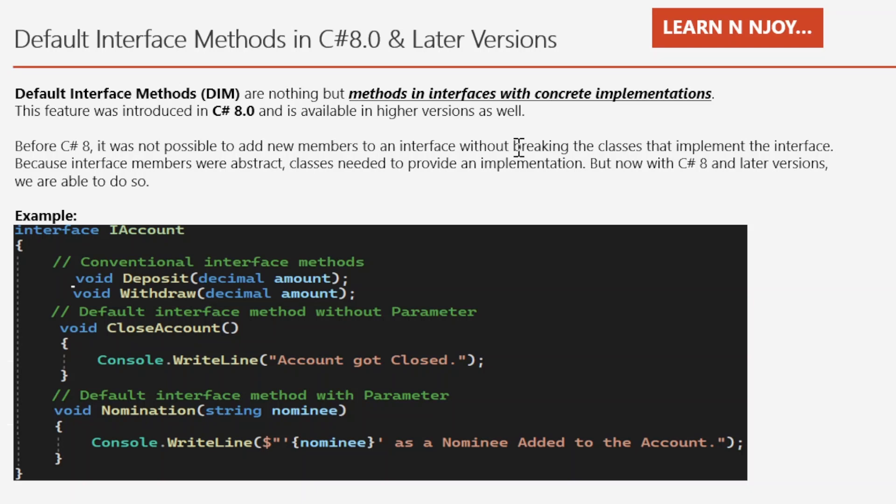The other default interface method is the nomination method, which is a parameterized method that accepts a string parameter named nominee. So with C# 8 onwards, interfaces can have default interface methods, which was not possible in earlier versions.